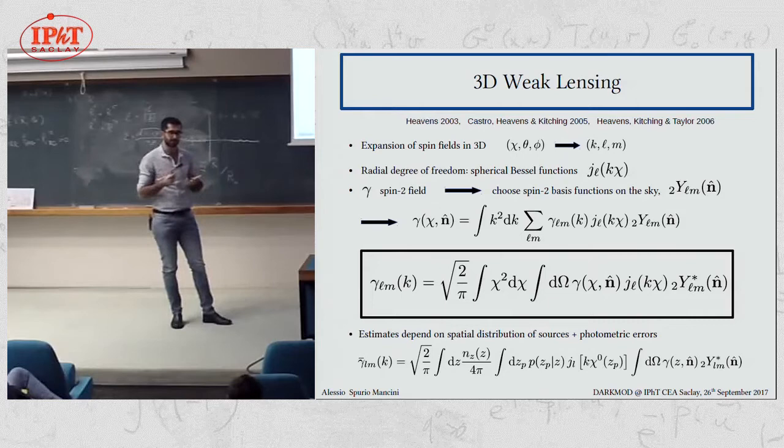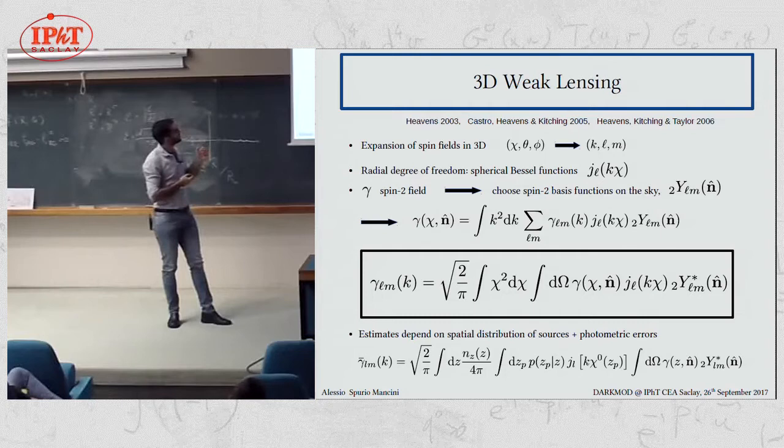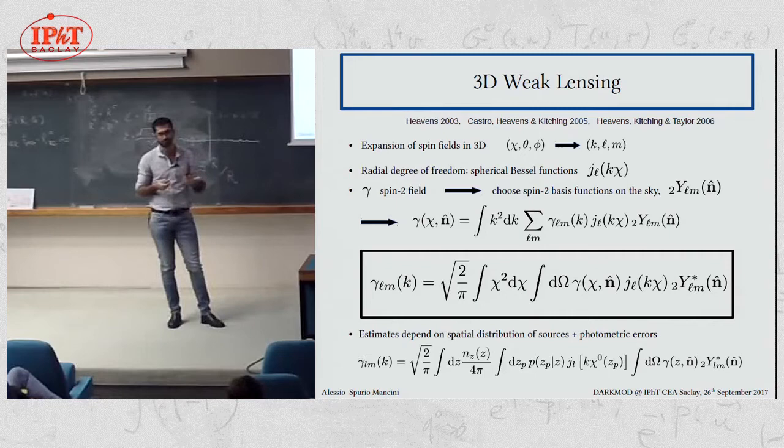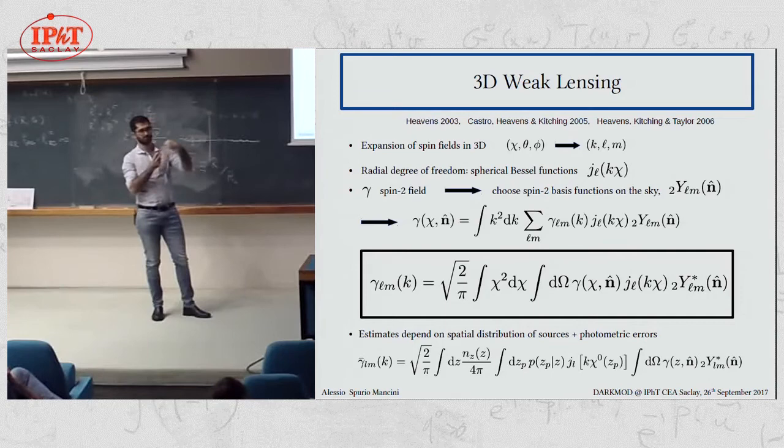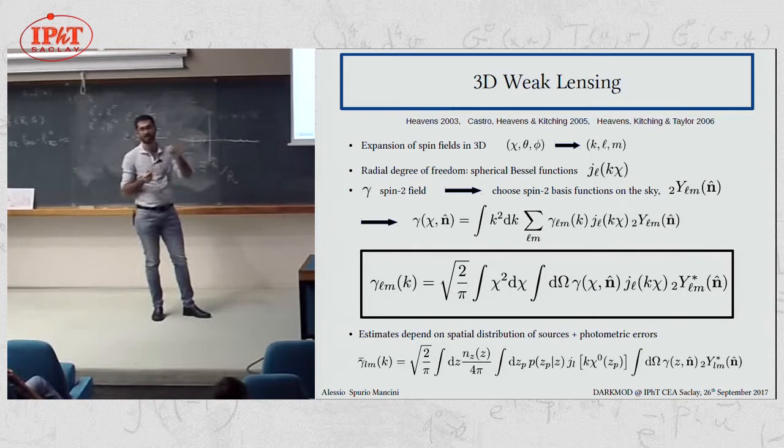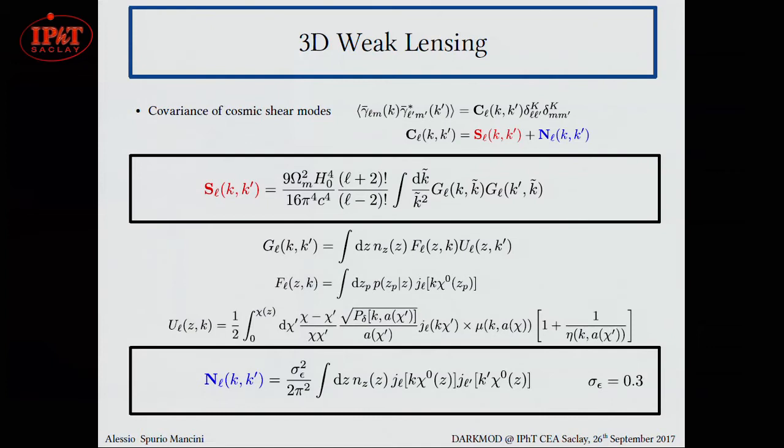The reason why we choose these bases is because they constitute together a set of eigenbasis, eigenfunctions for the Laplacian operator. So the relation between the coefficients of the expansion of the shear field to the coefficients of the delta field, of the density field, is clearer in this approach. Of course, we don't actually measure gamma_lm, but we have estimates for that. And this will depend on the distribution of our sources in space, and the error that we can make in assigning a redshift to each galaxy, which is modeled by some probability distribution. So we have n of z and p of z.